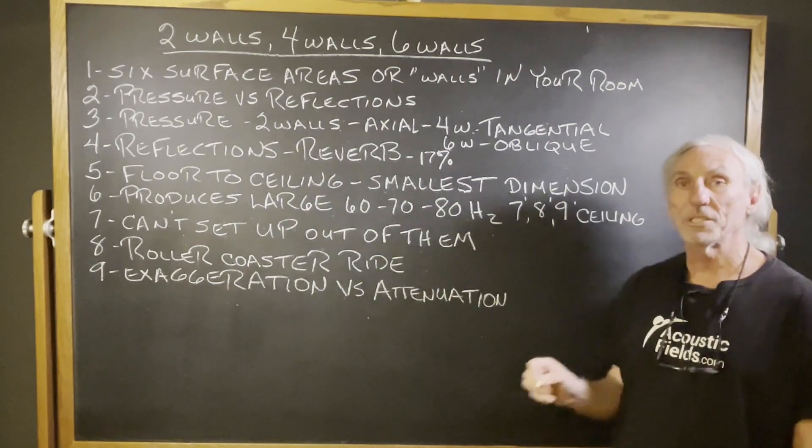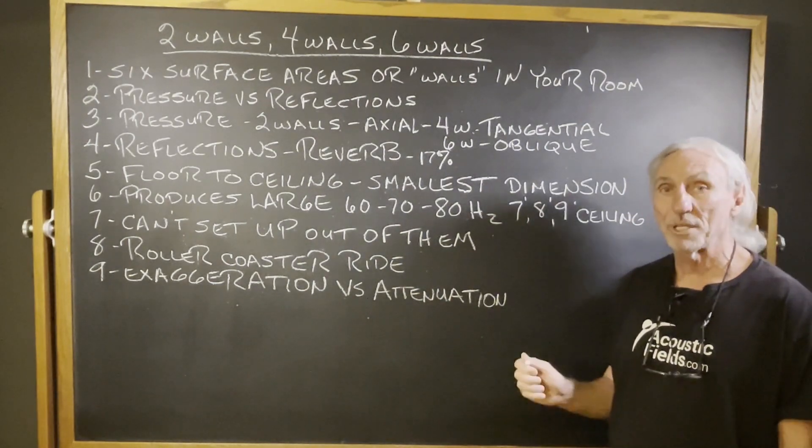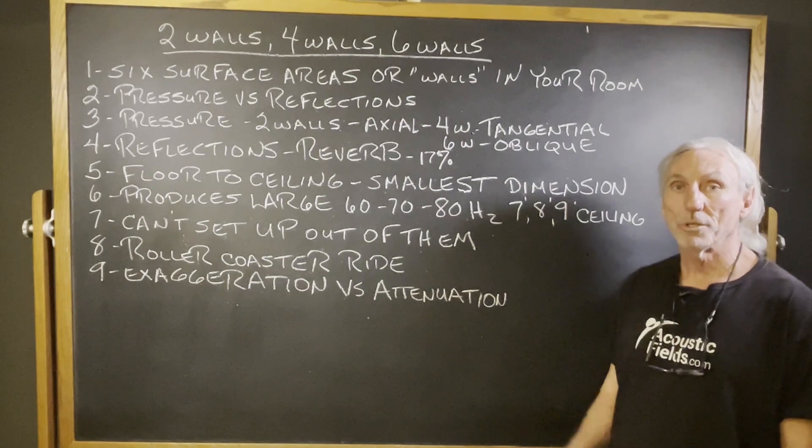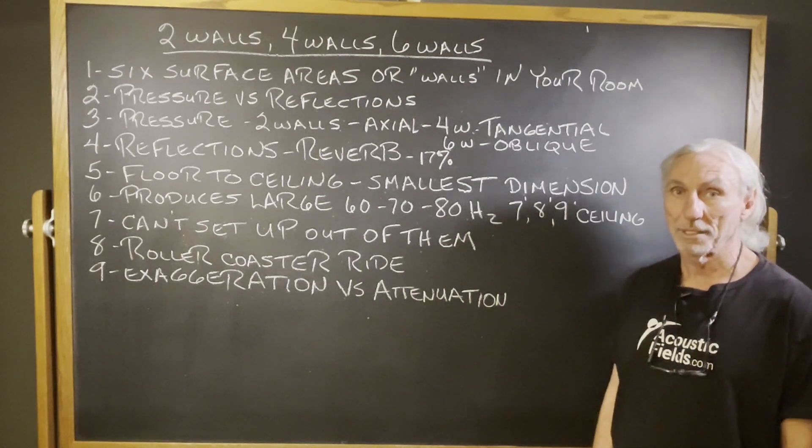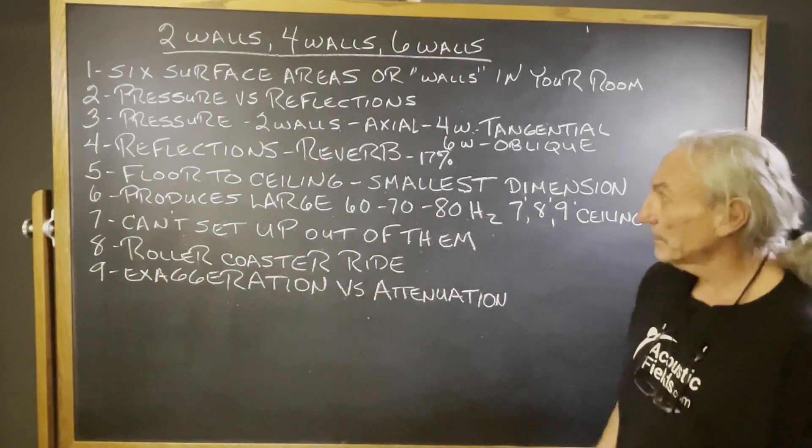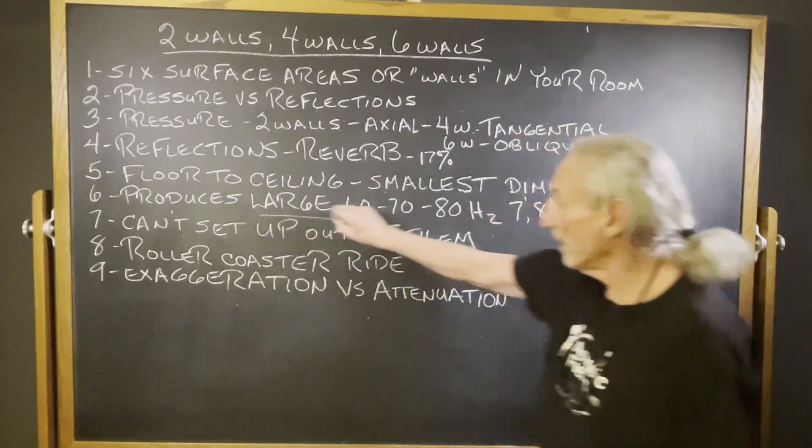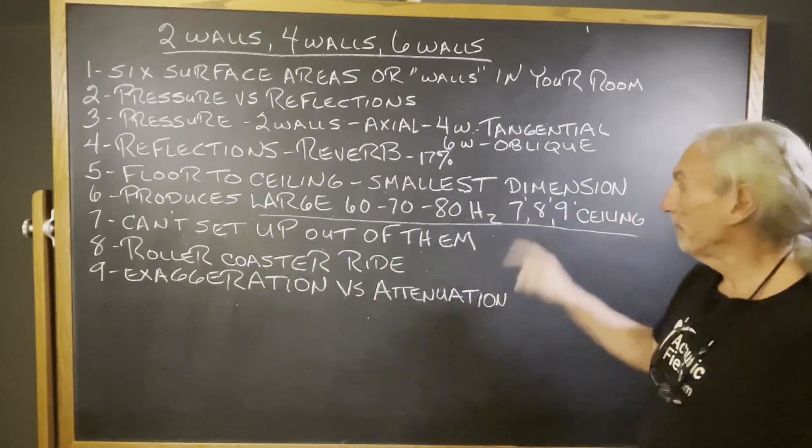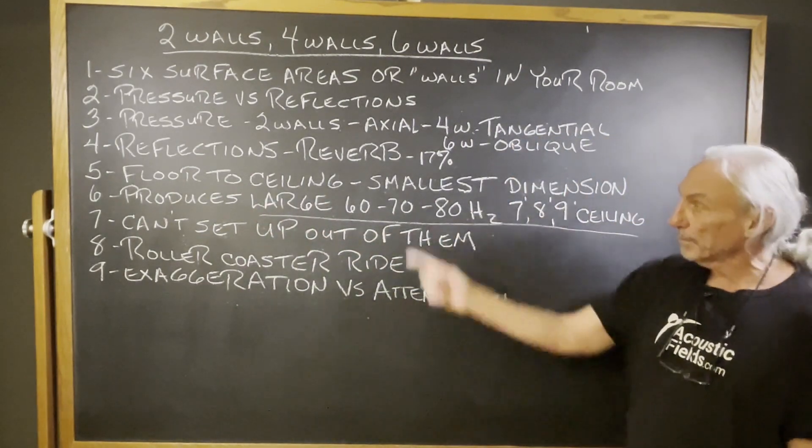Floor to ceiling, smallest distance usually. 98% of the time in rooms, the shortest distance will be the floor to ceiling distance. If it's the shortest distance, it's going to create the biggest problem. We look at this seven, eight, nine foot ceilings that we're faced with in North America here.